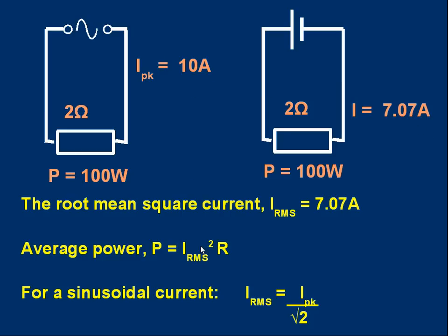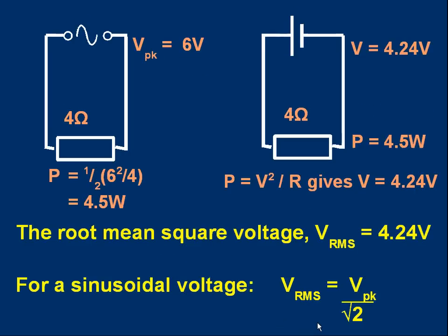You may want to know why it's root 2 — I'll explain shortly. The same argument applies for voltage. If I've got an alternating voltage with a peak value of 6 volts supplying a resistor of 4 ohms, you might want to check for yourself that the average power is 4.5 watts.